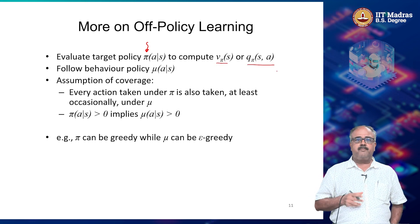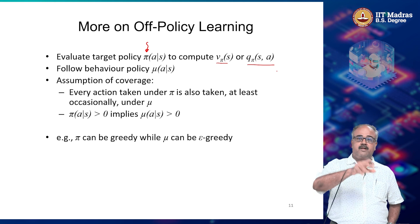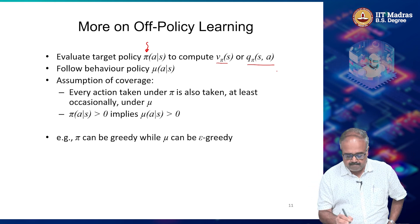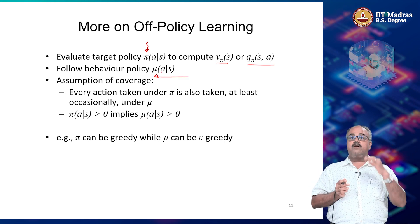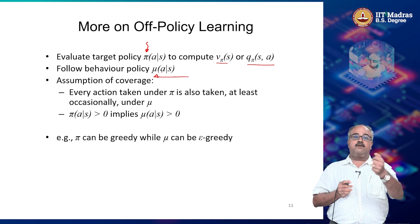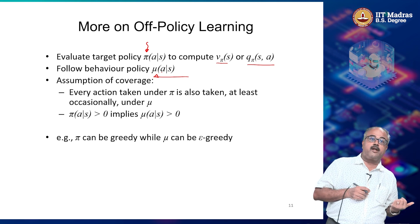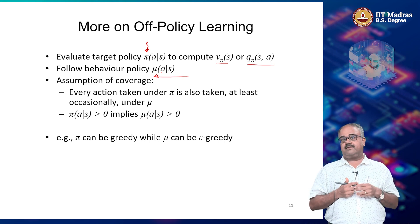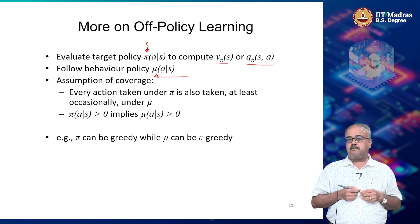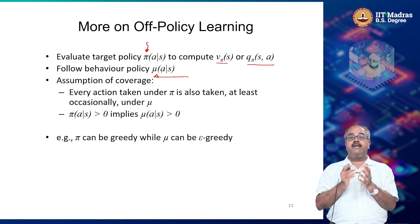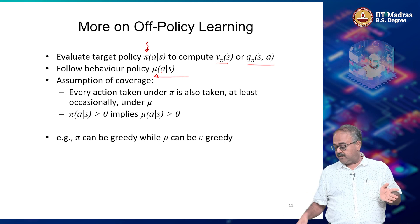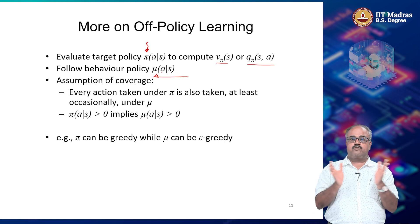You are trying to compute V-pi and Q-pi for a policy pi, but you are not able to sample the world according to pi — you are sampling the world according to mu, for whatever reason. One possible reason is that pi could be a deterministic policy, like in the greedy policy case where there was no exploration.